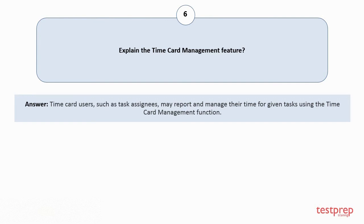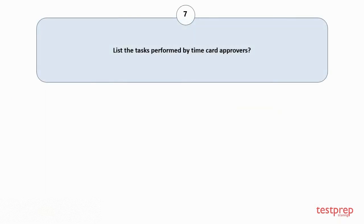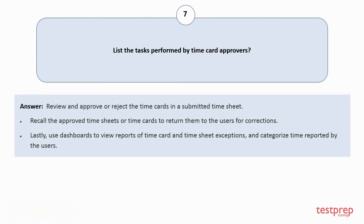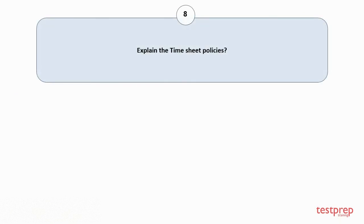Question number seven: List the tasks performed by time card approvers. Time card approvers can: one, review and approve or reject the time cards in a submitted time sheet; two, recall the approved time sheets or time cards to return them to users for corrections; three, use dashboards to view reports of time card and time sheet exceptions and categorize time reported by users.